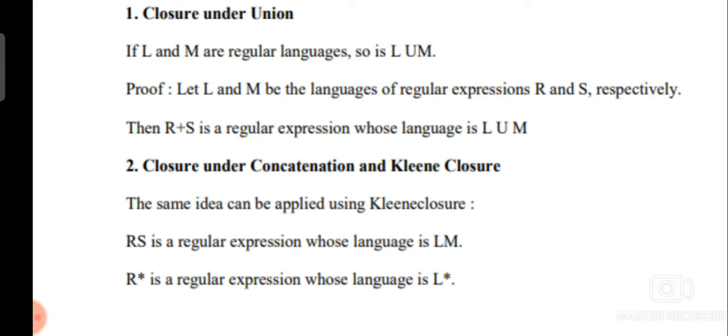The second operation is closure under concatenation and Kleene closure. R dot S, where the dot operator is used for concatenation, is a regular expression whose language is L concatenated with M. Similarly, R star is the regular expression for the language L star.